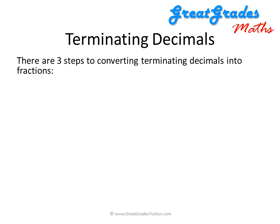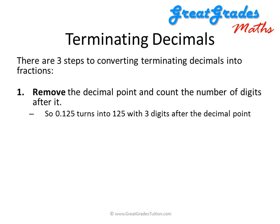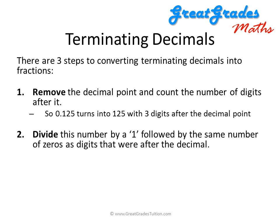There are three steps to convert a terminating decimal into a fraction. The first step is to remove the decimal point and count the number of digits after it. For 0.125, we remove the decimal point so it becomes 125, and we count three digits after the decimal point. We then divide this number by a 1 followed by the same number of zeros — so 125 divided by 1000, giving us 125 over 1000.